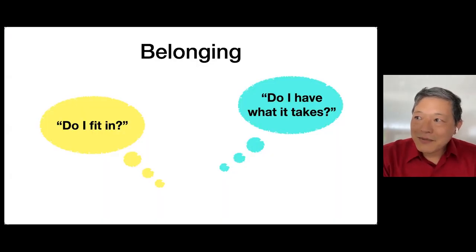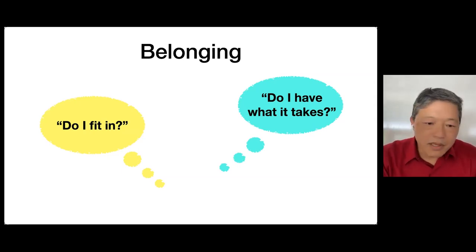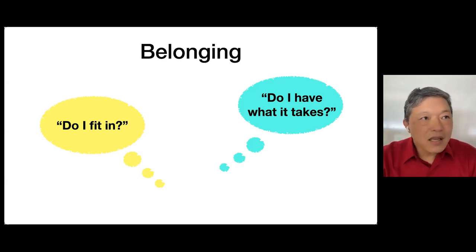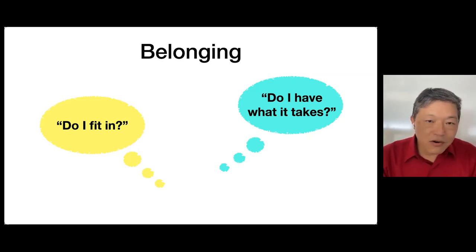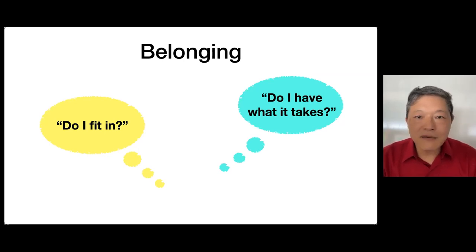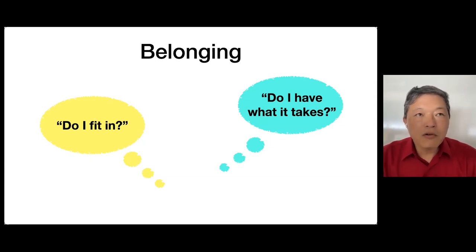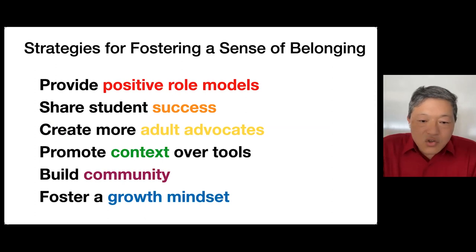People have studied the idea of belonging — it has two components: students' perception of whether they fit in with others, and whether they have what it takes to do the work. Stereotypes about who does computer science — the geek, the nerd, the outsider — send the wrong message about fitting in. For the 'do I have what it takes' component, we actually defaulted our course to pass/no-pass. Students can petition to take it for a grade, but removing the grade and substituting other feedback really helps remove the stress.